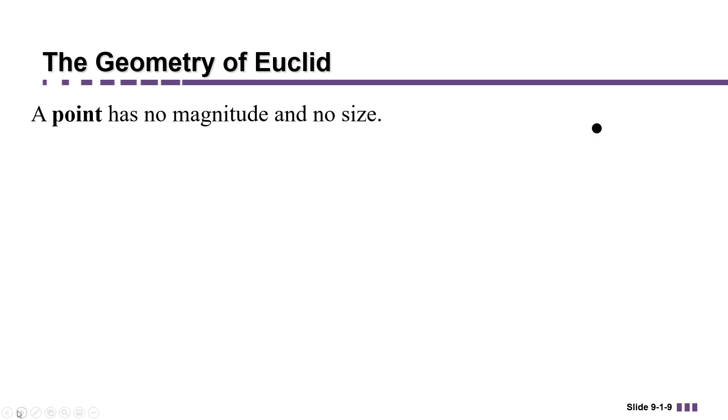In order to draw a picture of it, we make a dot, which obviously has some size, but in reality it's just indicating where the point is located in space. The point is considered to be zero-dimensional.